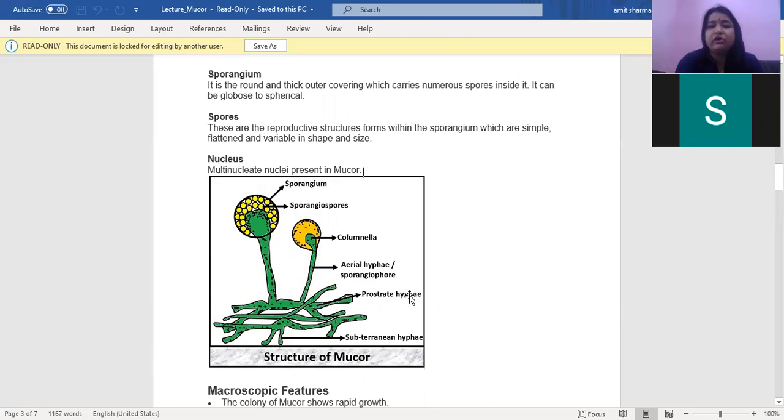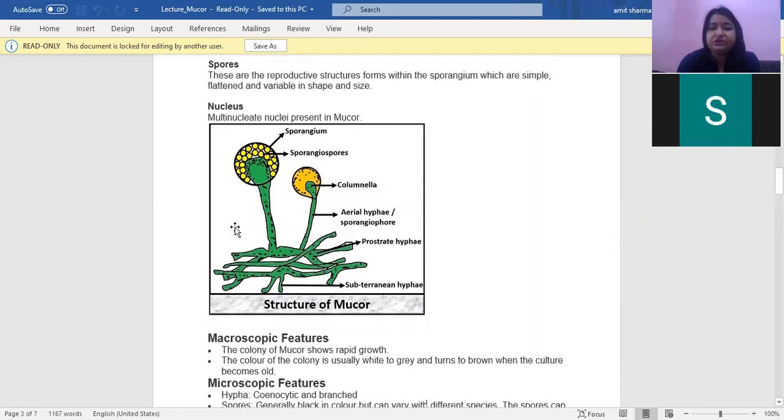The aerial hyphae are also called sporangiophore. It is divided into a dome-shaped structure called columella, and this columella has spores. The sporangium is round with thick outer covering, which carries numerous spores inside it. It may be globose to spherical in shape. The spores are the reproductive structure within the sporangium. They are simple, flattened, and variable in shape.